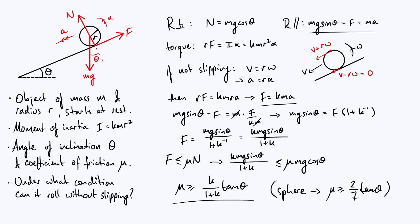To make this concrete: if k is two-fifths (a sphere), the factor is two-sevenths, so mu ≥ (2/7) tan theta. It's worth noting we're talking about the coefficient of static friction here, even though the object is moving, because there is no relative motion between the point of contact and the surface.